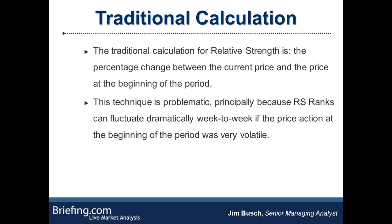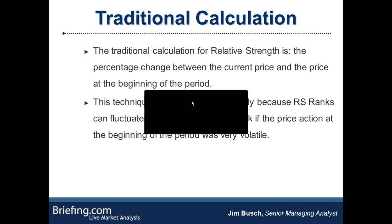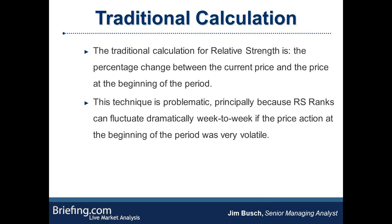So how is relative strength calculated? The traditional calculation is the percentage change between the current price and the price at the beginning of the period. So you're comparing the percentage difference between the current price and — since we use six-month relative strength — the price six months ago. I personally think the traditional calculation is problematic, mostly because you would see relative strength ranks that fluctuate dramatically week to week if the price action at the beginning of the period was very volatile. We used the traditional calculation at first when we started running Emerging Growth.